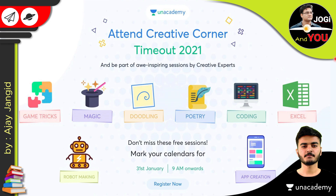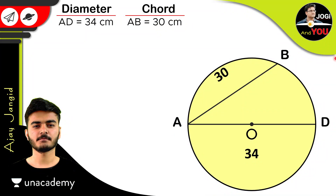So let's get back to the question. We have a diameter of 34 cm and a chord of 30 cm. Point A is common to both the diameter and the chord. Our question is simple: what is the distance between the center of the circle and the chord? The distance from an external point O to a line AB is the perpendicular distance, which is the shortest distance.